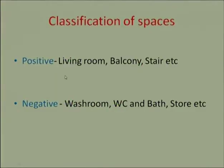Another classification divides spaces into positive spaces and negative spaces. The purpose of this division is that positive spaces — having a good look — should be in front of the building, so that whenever an outsider approaches or meets family members they should not have a view of negative spaces like washing places or storage. In positive spaces: living room, balcony, stair, office, and dining space. Negative spaces: washroom, WC, bath, store, garage, and servants room. In planning we will hide the negative spaces — locate them at the back of the building — and locate positive spaces at the front facing the street.